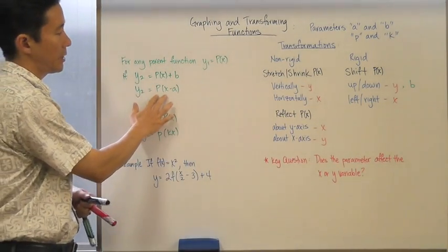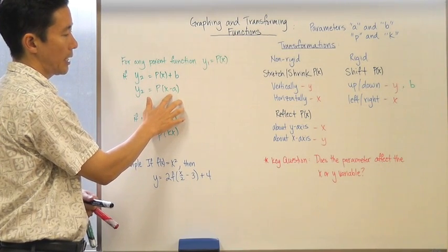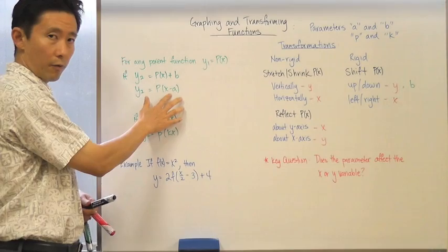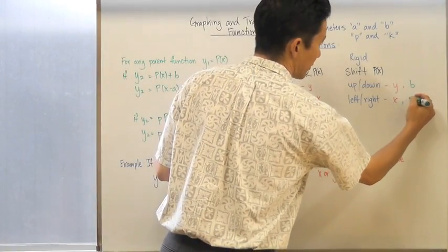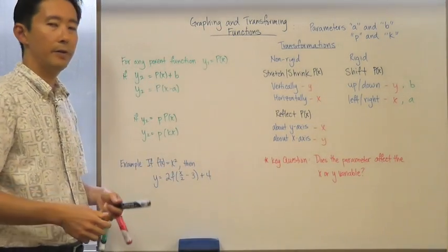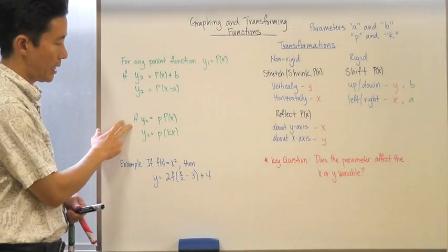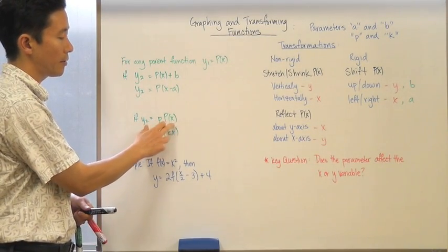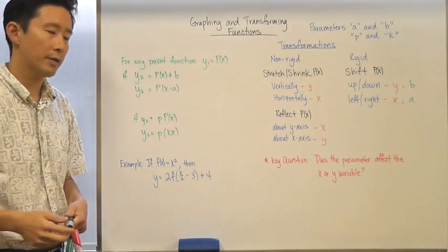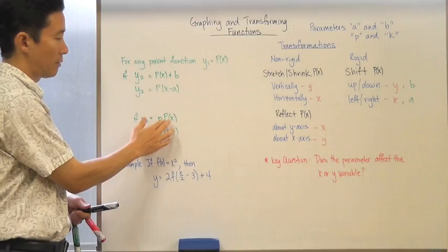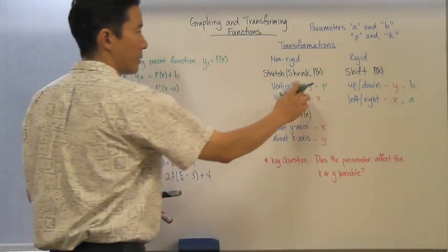Now, if y₂ is p(x minus a), notice that we're affecting the x value this time because we're subtracting a. And we know from before that this is then going to be a left or right shift, meaning the left or right shift — which affects the x value — is incorporated with parameter a. And if y₂ equals p times the parent function, we're multiplying all of those y values by the scalar factor p, so we're stretching or shrinking vertically with parameter p.